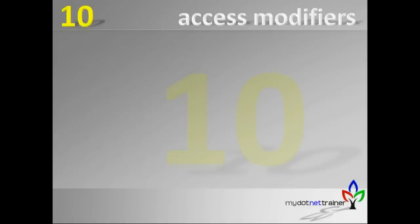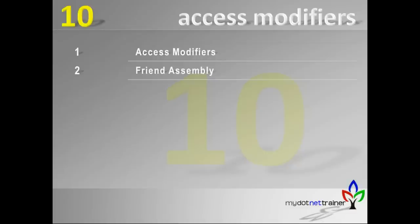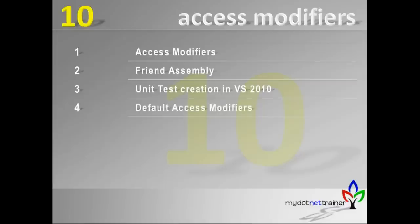We are in session 10 today. We will be looking into access modifiers in .NET, especially with C# and VB.NET. We'll see the list of access modifiers, what a friend assembly is, and unit test creation in VS 2010 - how to create and run tests inside Visual Studio. We'll also cover the default access modifiers - what the compiler takes implicitly if you don't specify any access modifier explicitly.